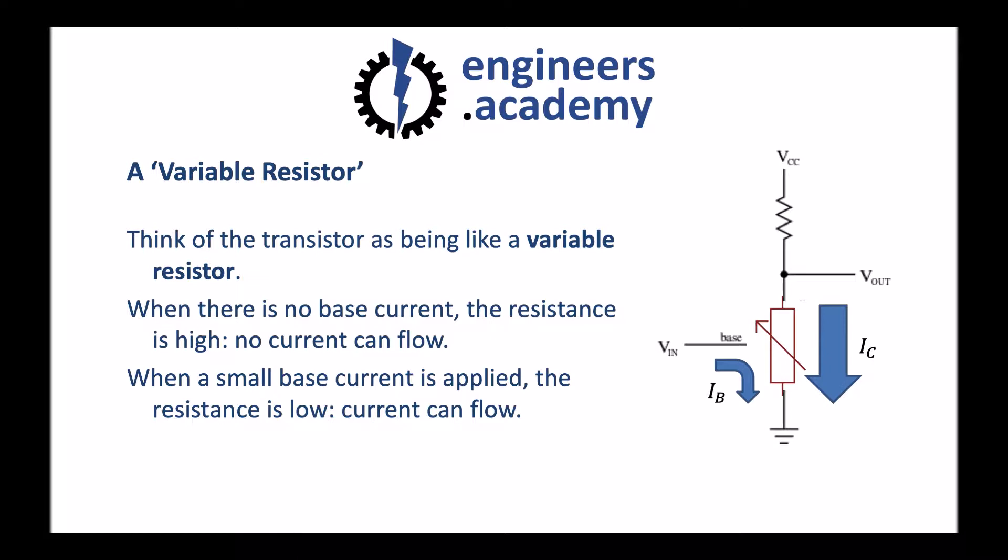What this means is that a small base current can allow a very large collector current to flow into the collector and out of the emitter. This means the transistor is very useful as an amplifier. We can take very small signals and allow the transistor to produce very large signals as a result. We get to a point though, as the base current increases, that maximum current is flowing through the transistor. This is what we call saturation. The transistor is at its lowest resistance and it's allowing the maximum collector current possible.